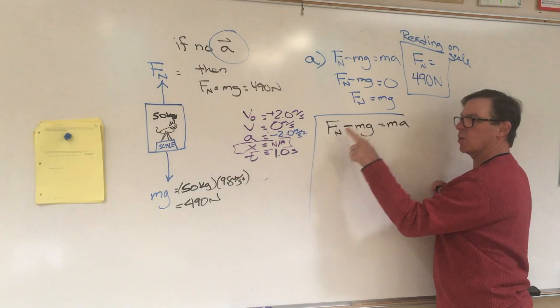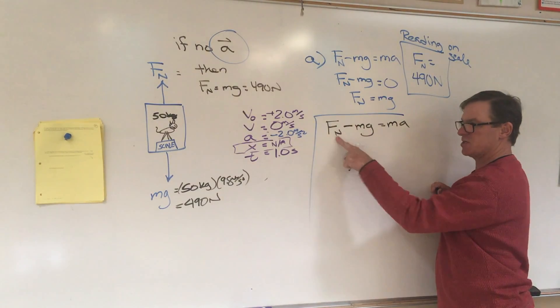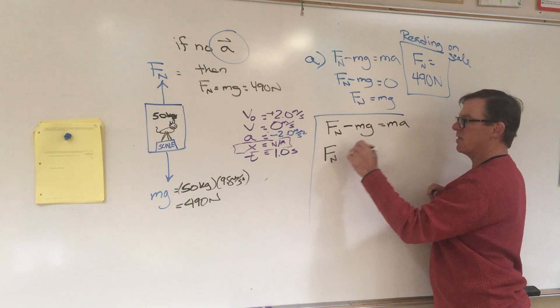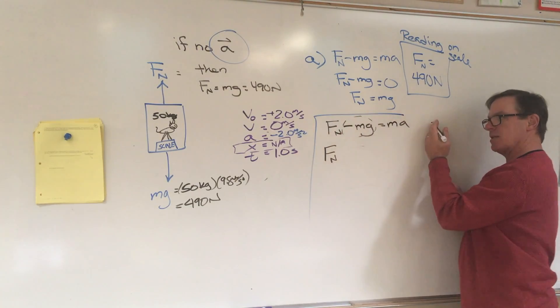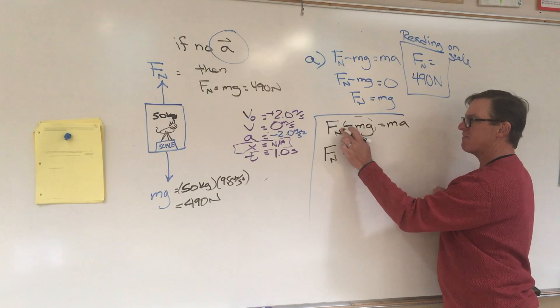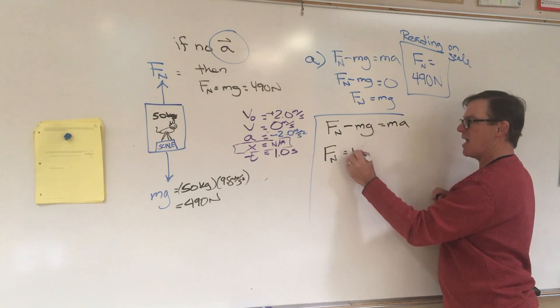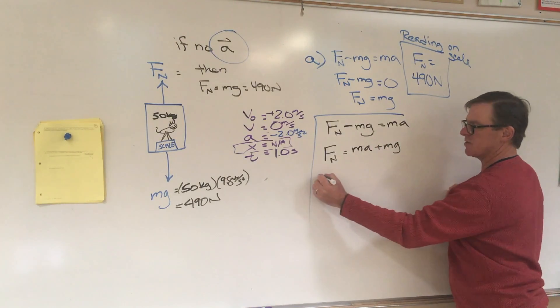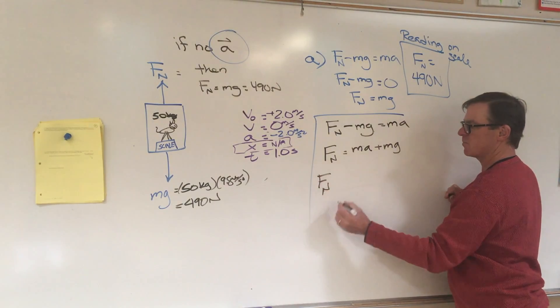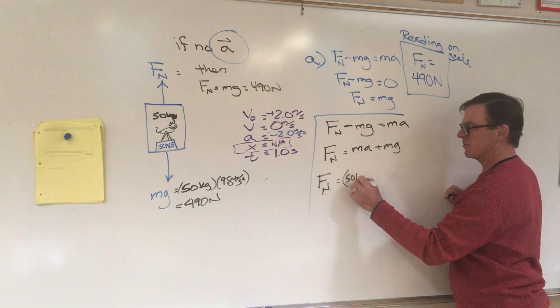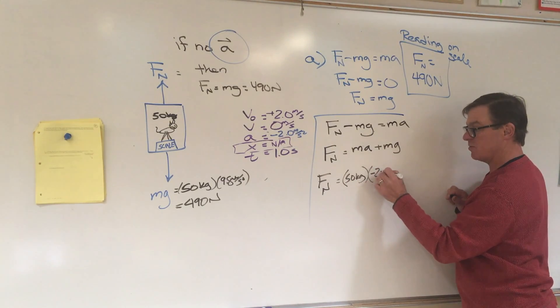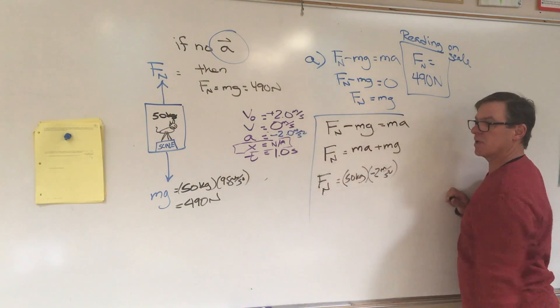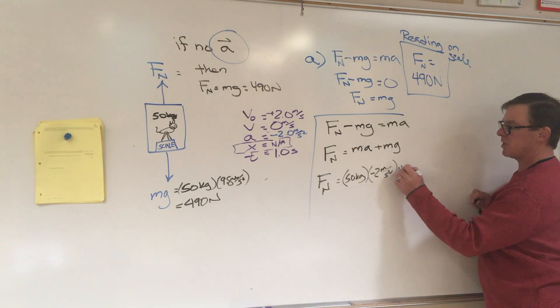Up minus down equals MA. What are we looking for? We're looking for the reading on the scale, which is the normal force the scale exerts on the dog. So moving this negative MG to the other side makes it positive, and we get Fn equals MA plus MG. So now let's just do the calculation.